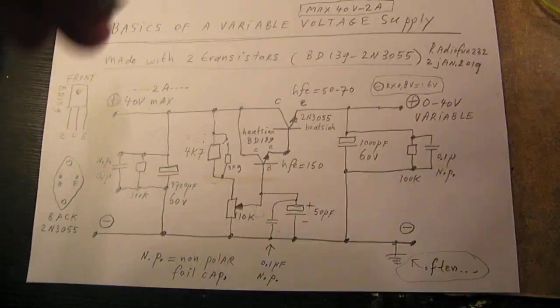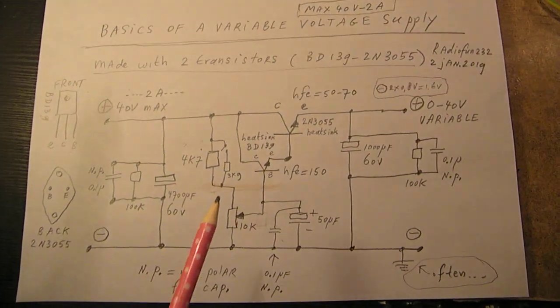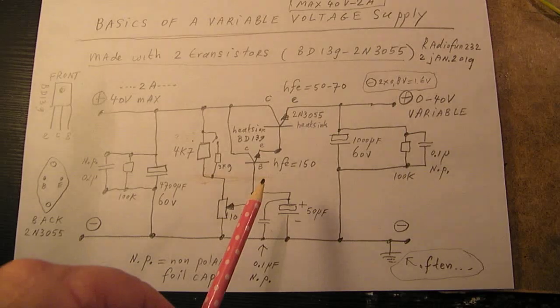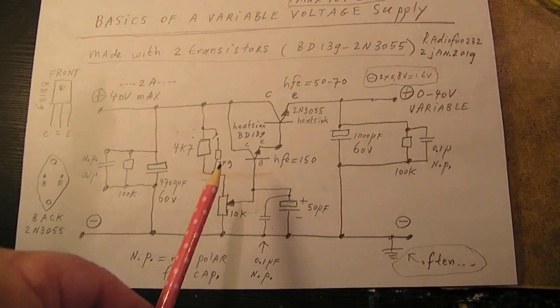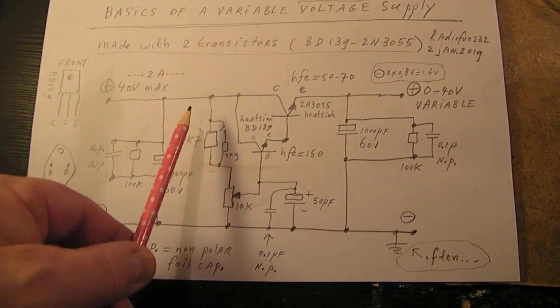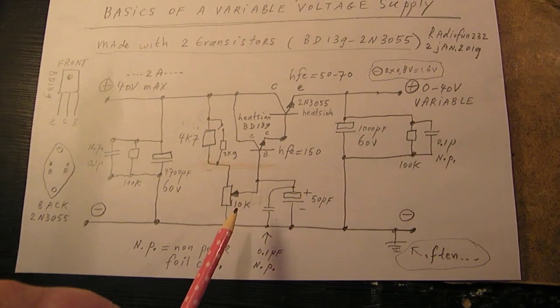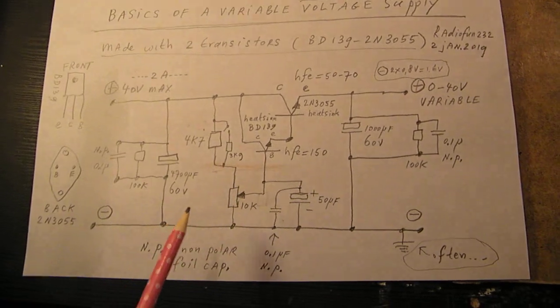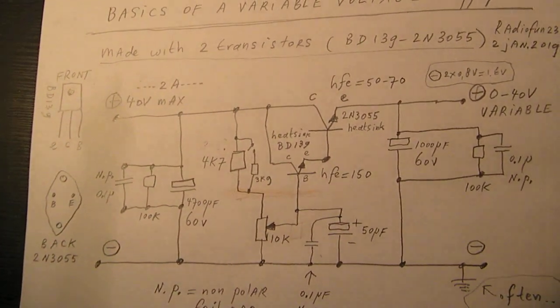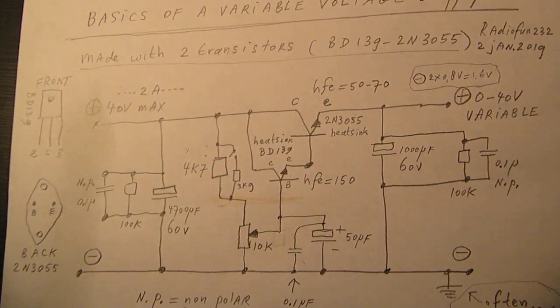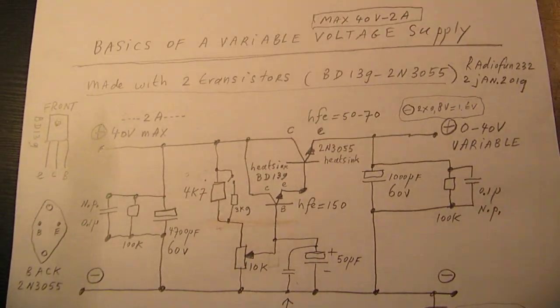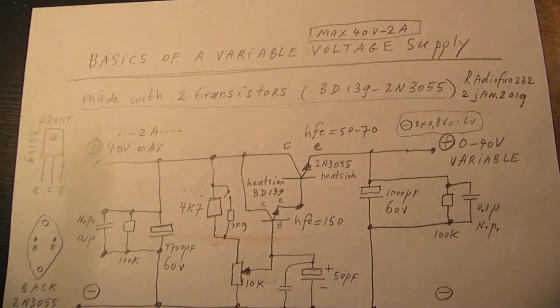Very simple, by the way. A Darlington - to the base of the first transistor we send a variable voltage that we take out here. So this is between zero and say 40 volts.